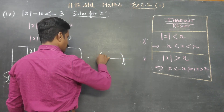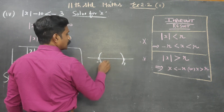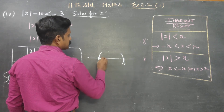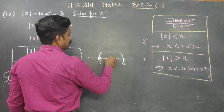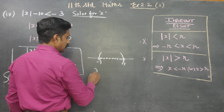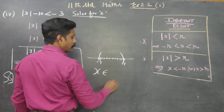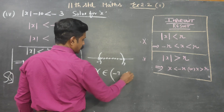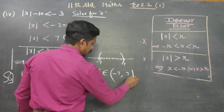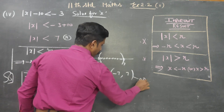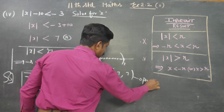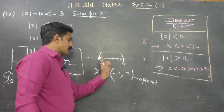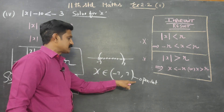Therefore, your answer will not include minus 7 and plus 7. The solution does not include minus 7 and plus 7, but includes all the values between minus 7 and plus 7.